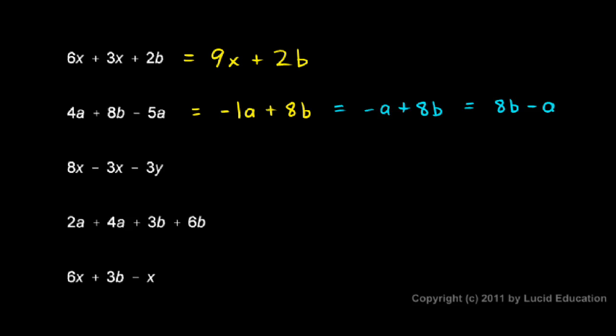Let's look at the next one: 8x - 3x - 3y. Well, the two like terms in this case are pretty easy to identify. Those are both x terms. 8x minus 3x is 5x. And I still have the minus 3y. So 5x - 3y is the answer.